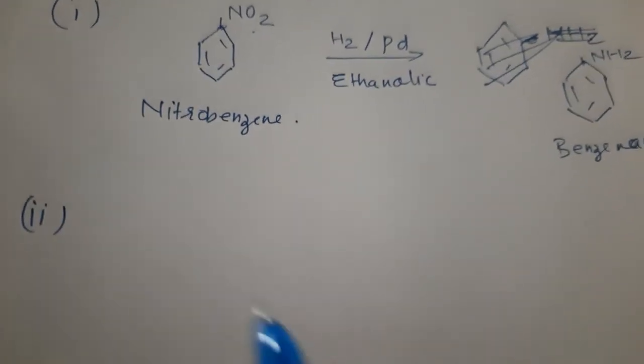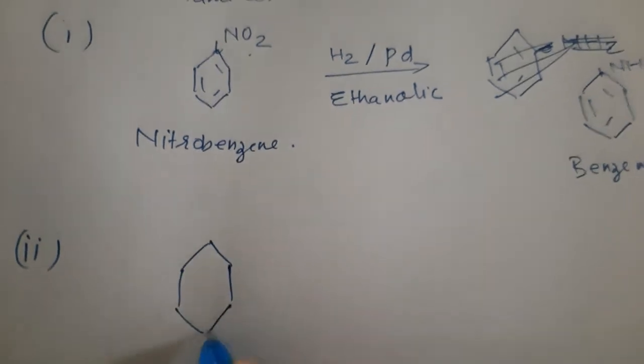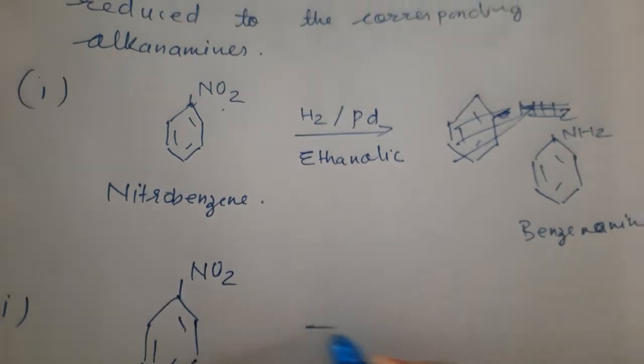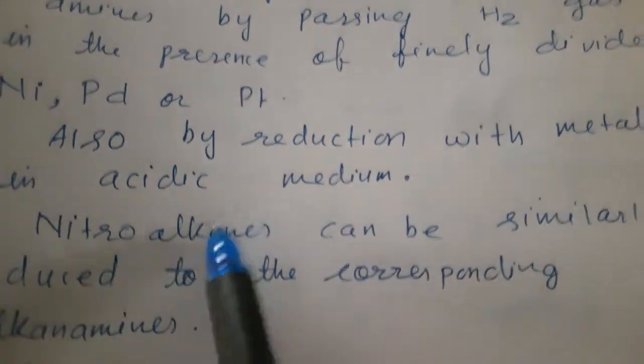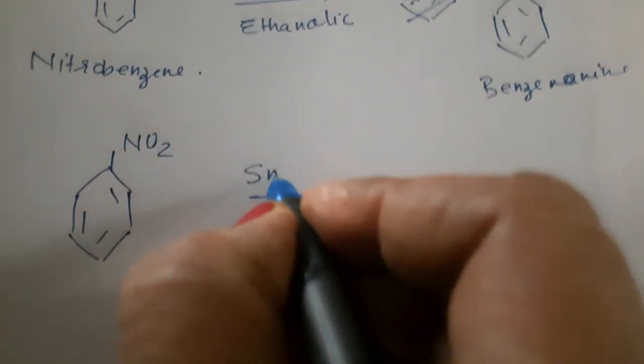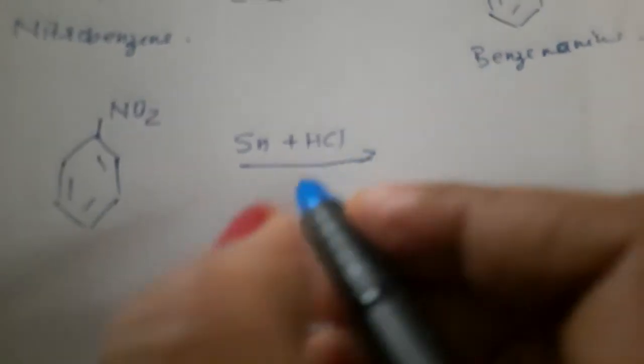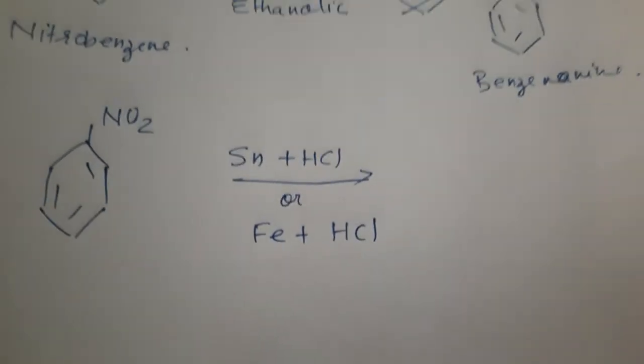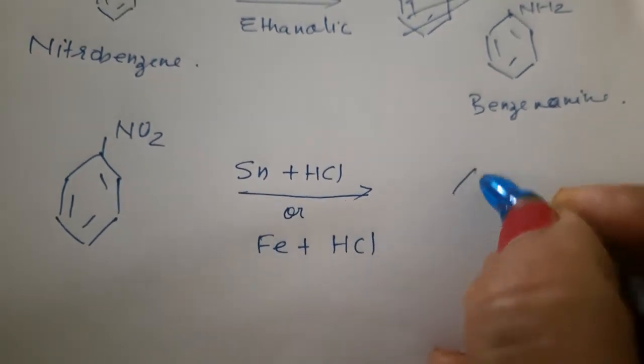Then, this is Nitro Benzene. If this is acidic medium, we will treat it. Nitro Benzene. Then, as I have written here, Reduction with Metal in Acidic Medium. So, Metal, what is it? Sn, Tin, Plus HCl. Metal in Acidic Medium. Or, Iron and HCl can also be taken. So, Sn plus HCl or Fe plus HCl.